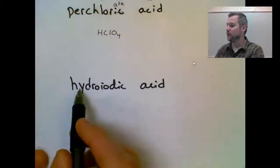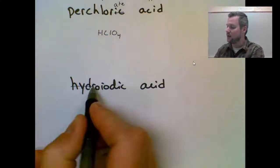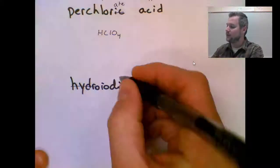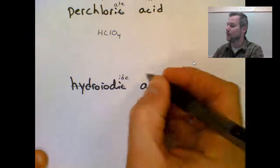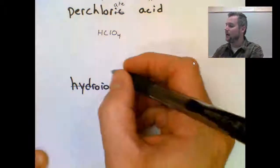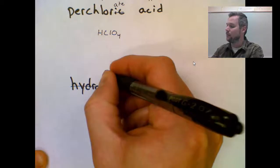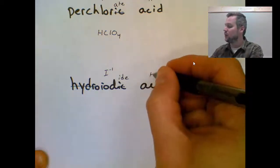Hydroiodic acid. Because it begins with hydro and ends with -ic, I can cross off the hydro and the -ic and replace it with -ide. That comes from -ide. So iodide, which is I minus one.